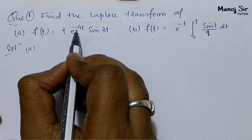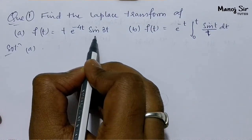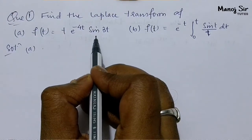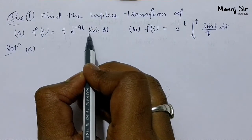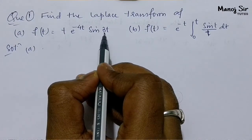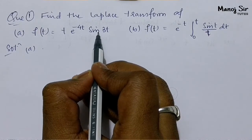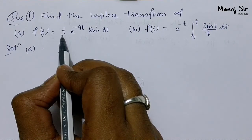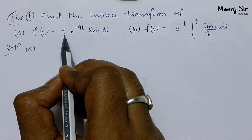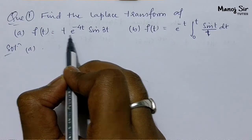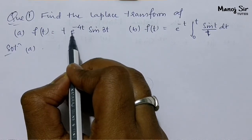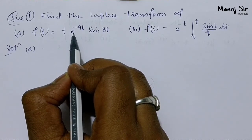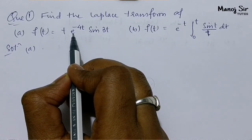For the first part, f(t) = t·e^{-4t}·sin 3t. Here we will first find the Laplace transform of sin 3t, then apply the multiplication property, and finally apply the shifting property because of the exponential form — at the very last step.